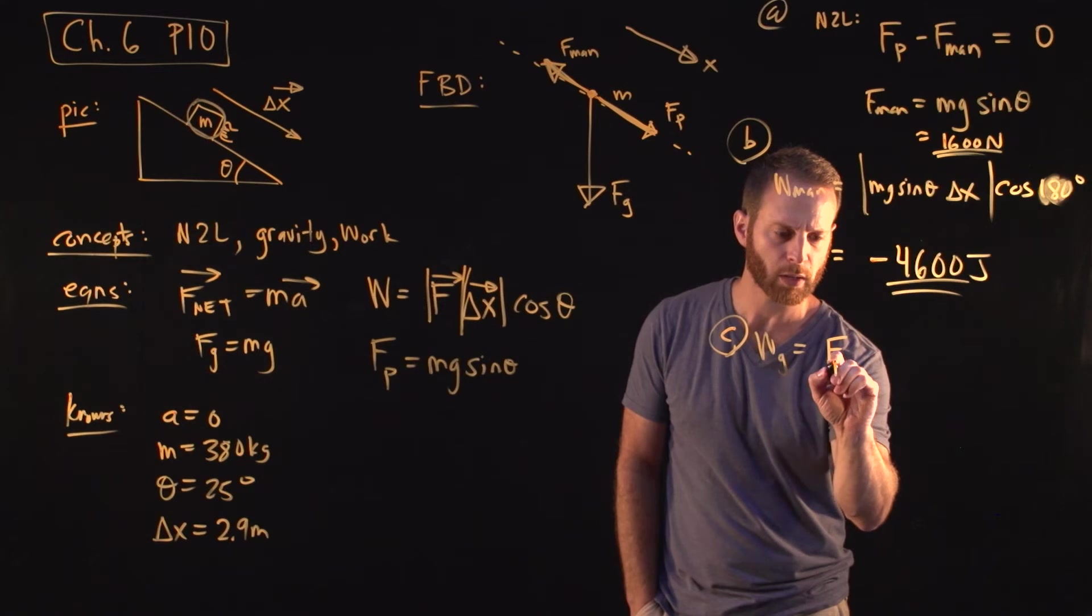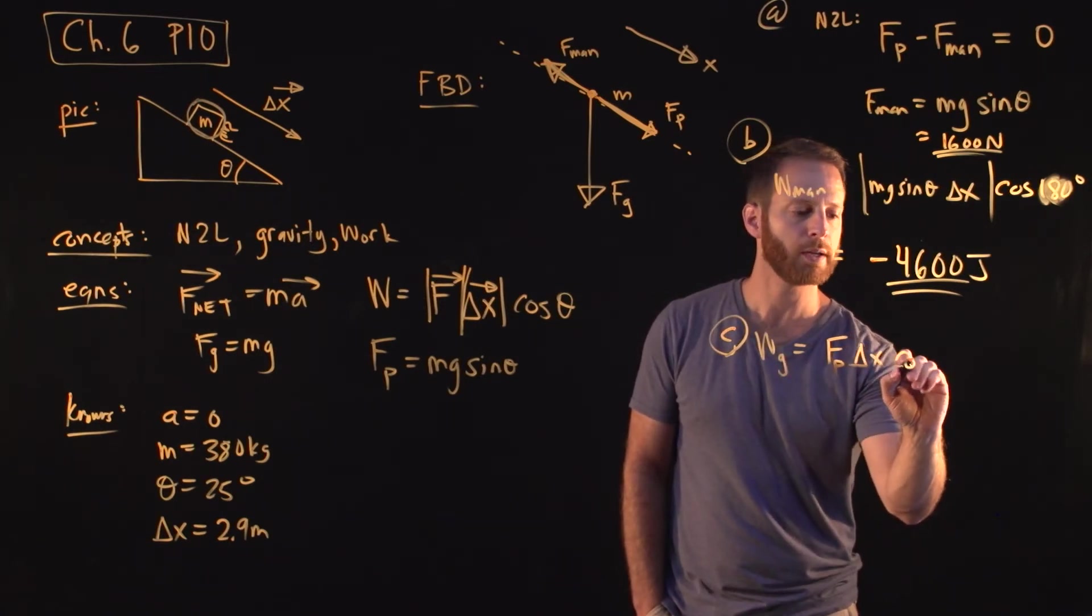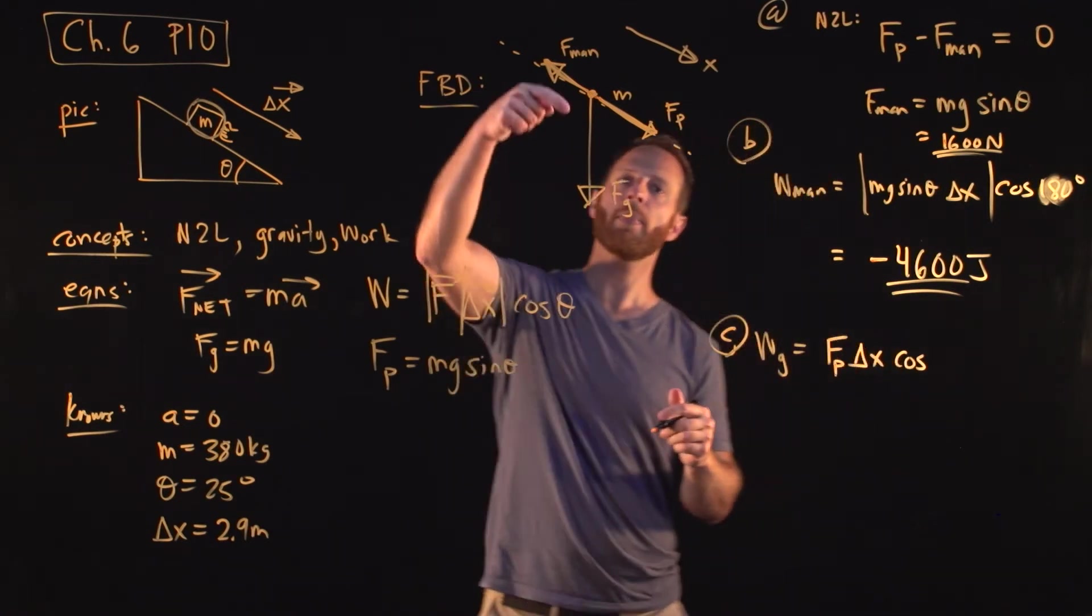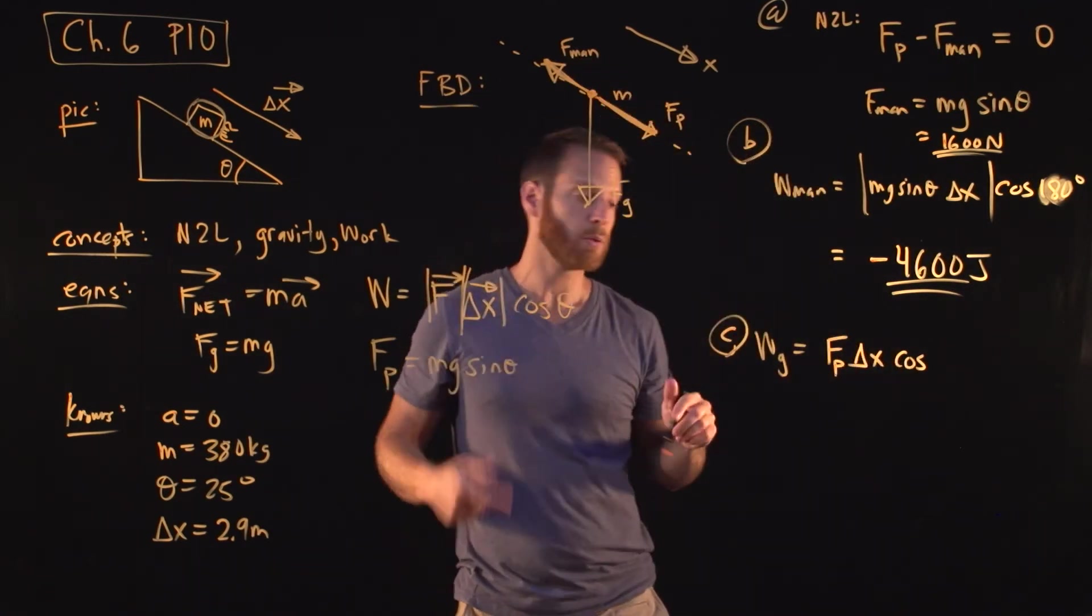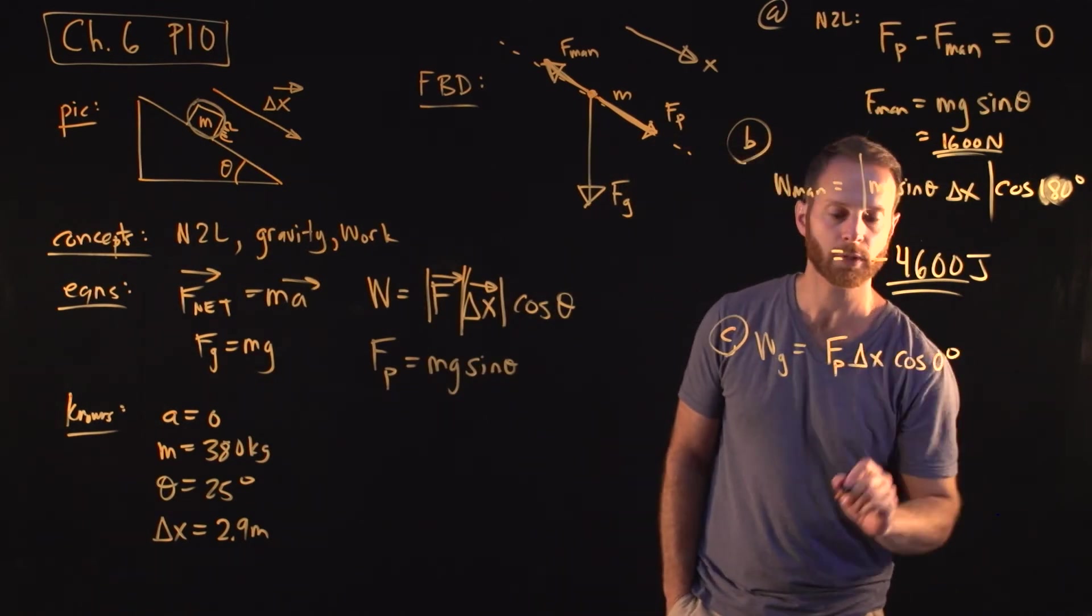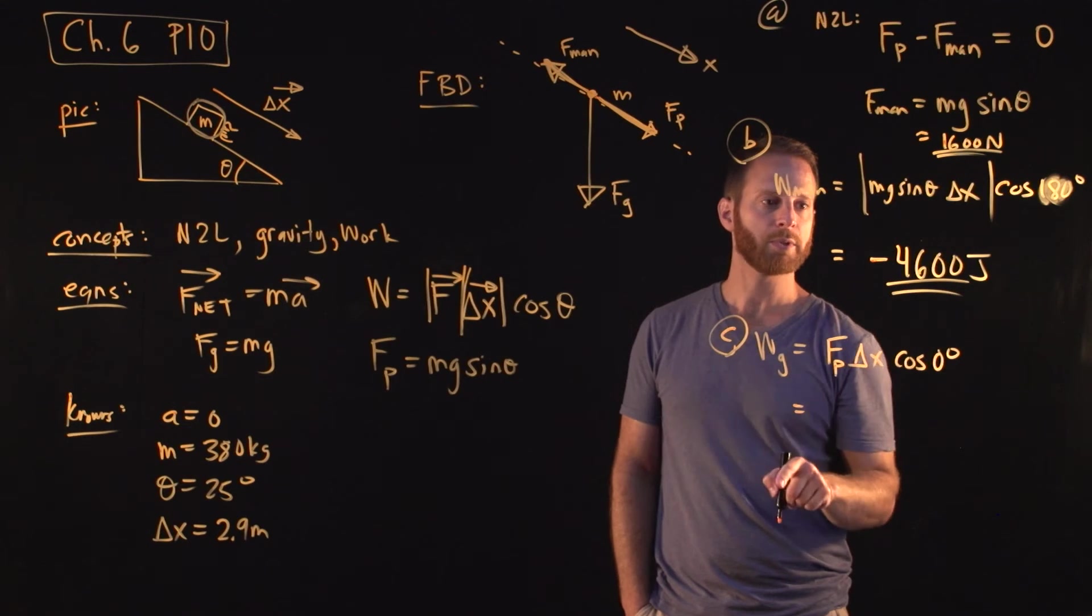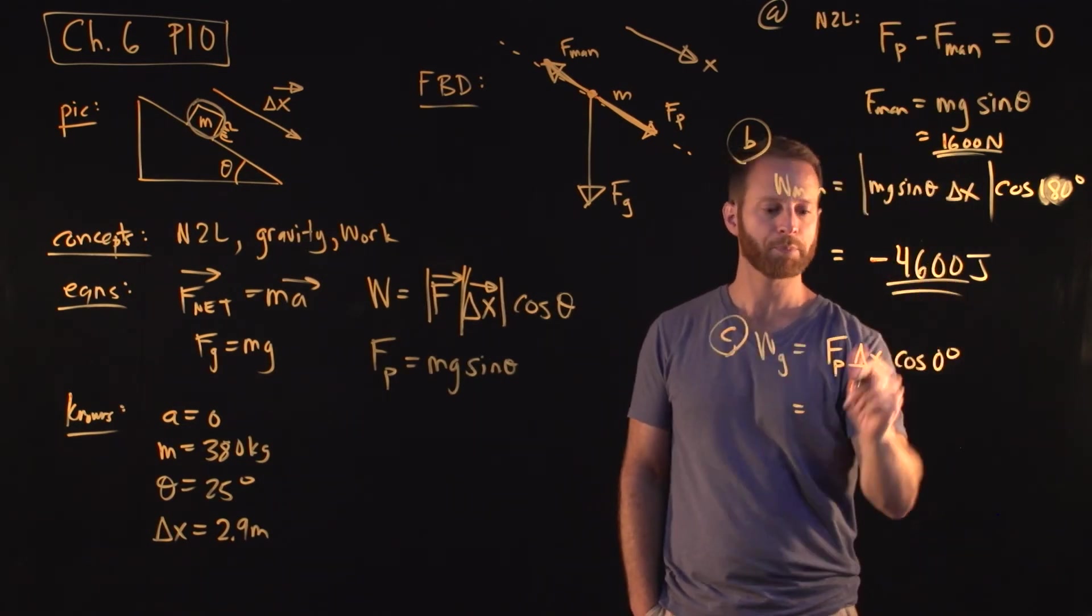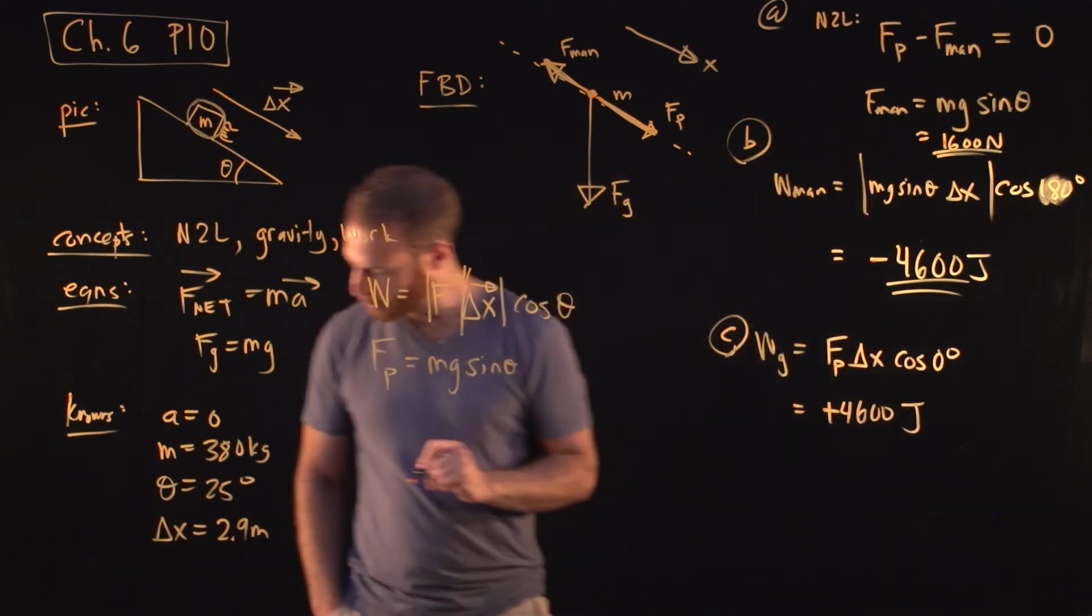So what we have here is the parallel component of gravity, the displacement, and then the cosine of the angle between the parallel component of gravity and the direction of the displacement. That angle is zero degrees, and so this is just the cosine of zero. And so what we have here is the parallel component of gravity times the displacement. Not surprisingly, it turns out to be plus 4,600 joules.